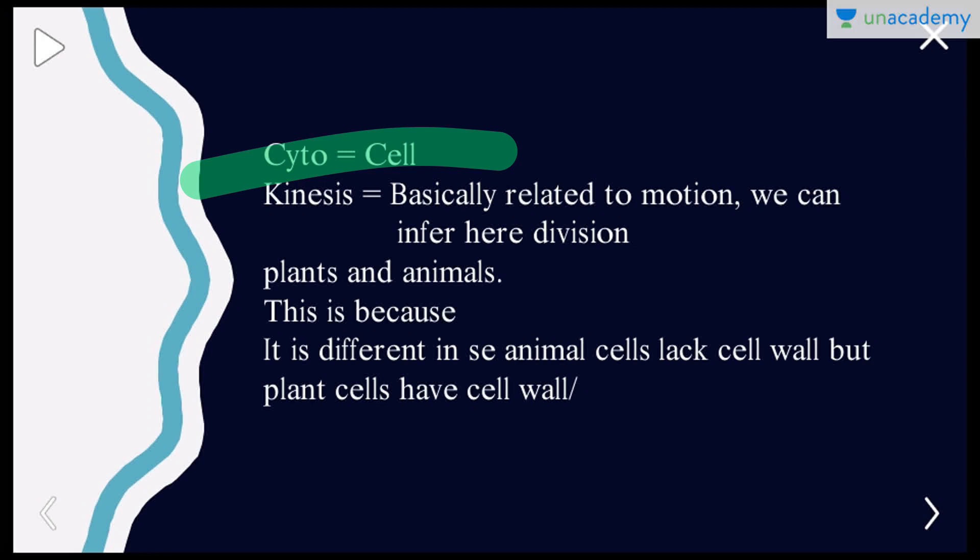This process happens in two different ways in plant and animal cells, because both have different structures and functions. Plant cells have a cell wall but animal cells do not — this is the very reason why there is a different process of cytoplasmic division in the case of plants versus animals. So let's have a look.